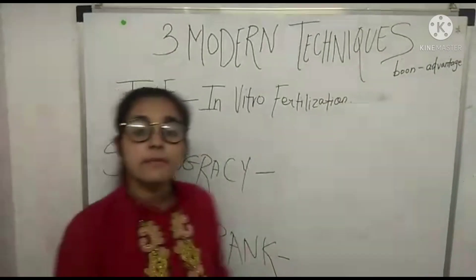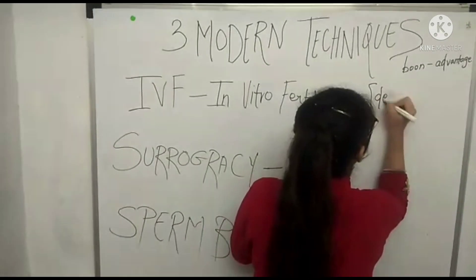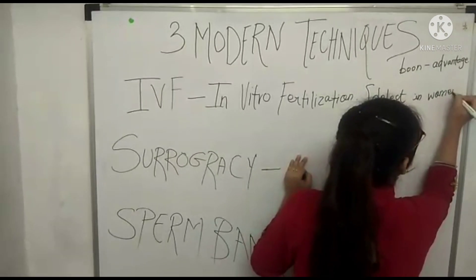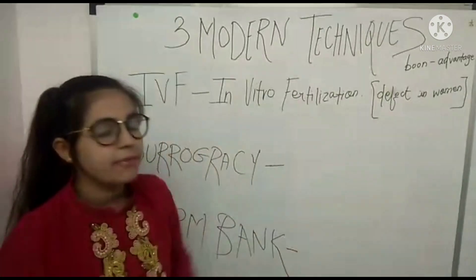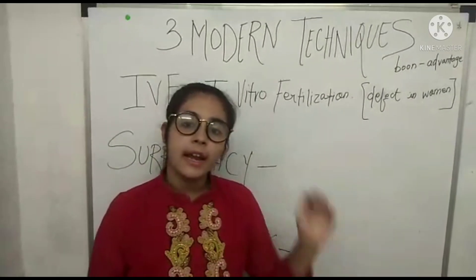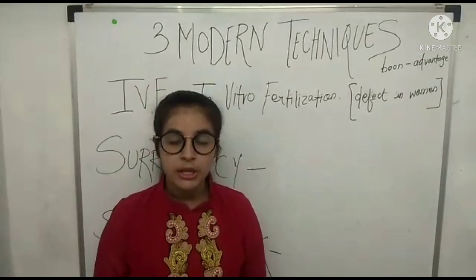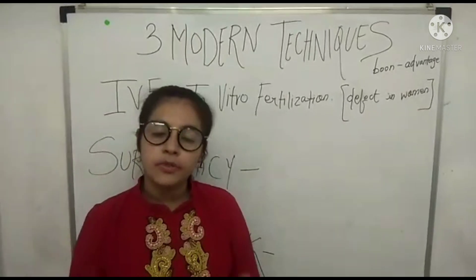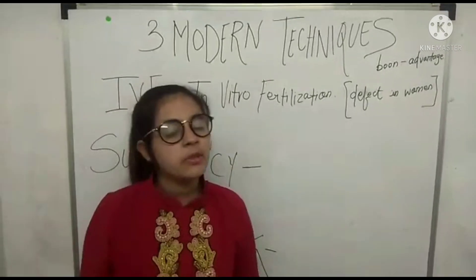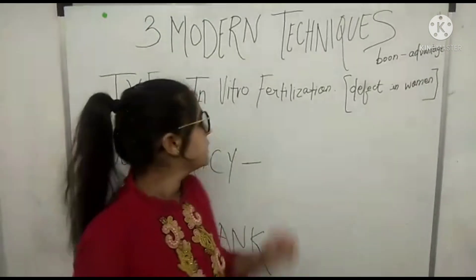In this technique, there is a defect in the woman — she has a problem with the embryo. The sperms of the father and the oocytes of the mother are collected and brought into a test tube for fertilization, and then they are implanted in the uterus of the woman at the appropriate time. This is known as In Vitro Fertilization.